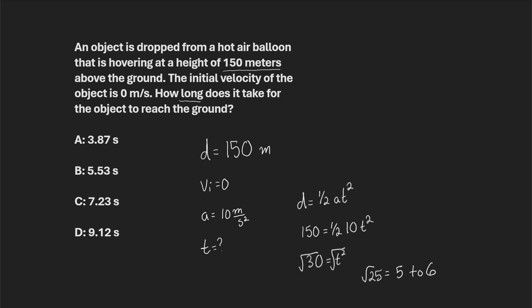And of course, of these answer choices in the multiple choice, the only one that could be correct is B. So B, the answer is 5.53 seconds. And so that's how we figure out the correct answer without necessarily knowing the square root of 30.